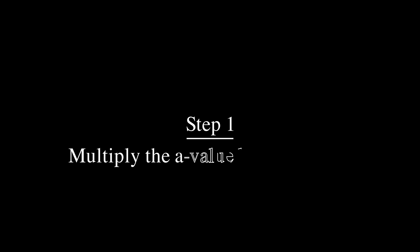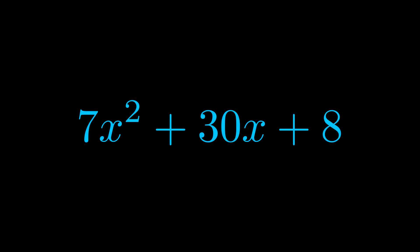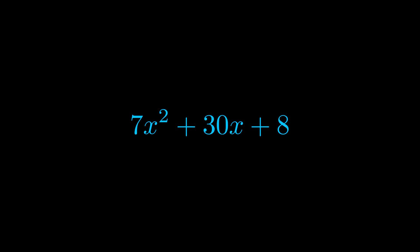Step one when factoring an equation of this form is to multiply the a value by the c value. Here we can see that our a value is the coefficient on the x squared term and our c value is the constant term.